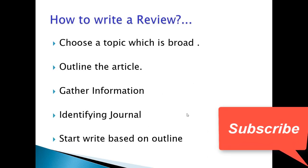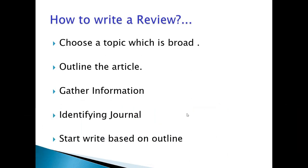Next, we will discuss how to write a review. Firstly, we will choose a topic which is broad and one we are interested to write about. Next, we will prepare the structure of the article, mentioning the different topics and subtopics we are going to discuss. Next, we will gather information on those topics and subtopics. Then we will identify the journal on which we are going to publish our review paper, so that we choose the correct format. Then we will start writing based on the outline.